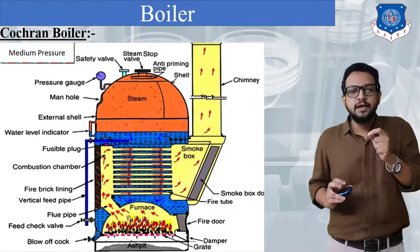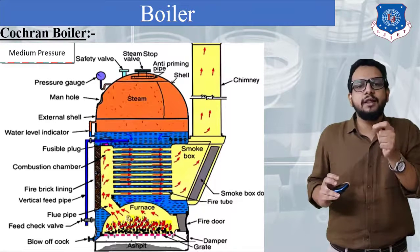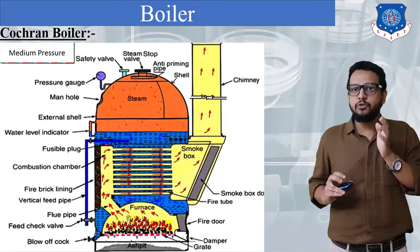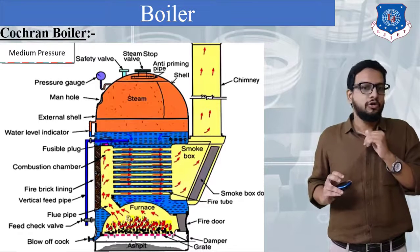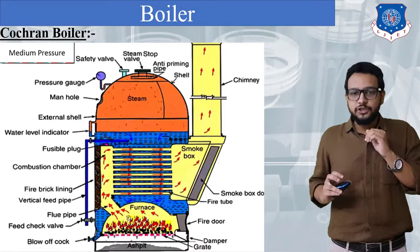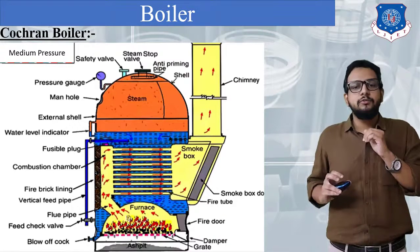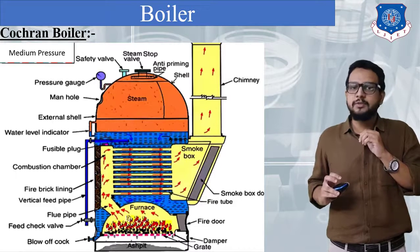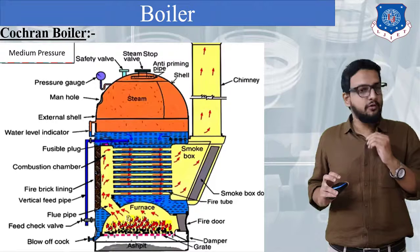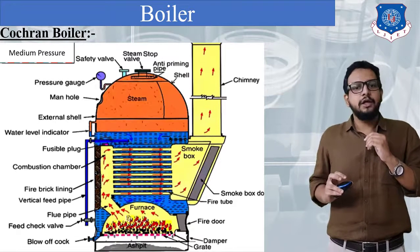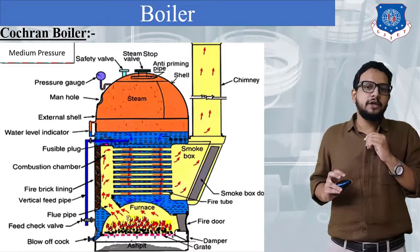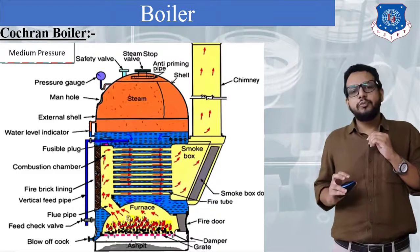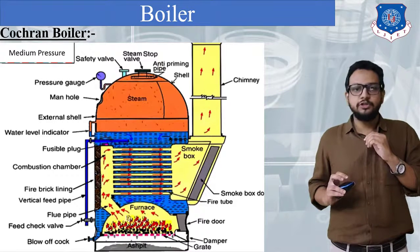Exactly below the steam stop valve there is an anti-priming pipe, which is going to convert wet steam into dry steam. The steam portion is represented by orange colour whereas the water present is represented by blue colour, so the steam in contact with water means the steam will be wet steam. On the top left side you can see a pressure gauge, which is going to measure the pressure of steam generated inside the boiler shell.